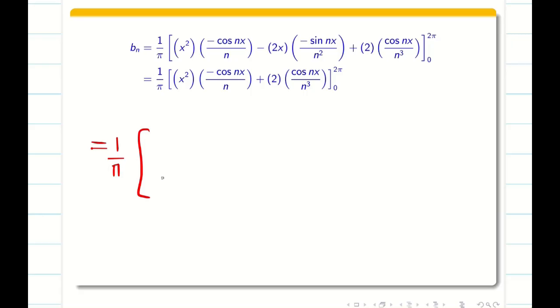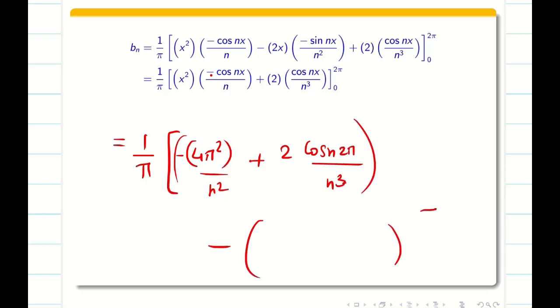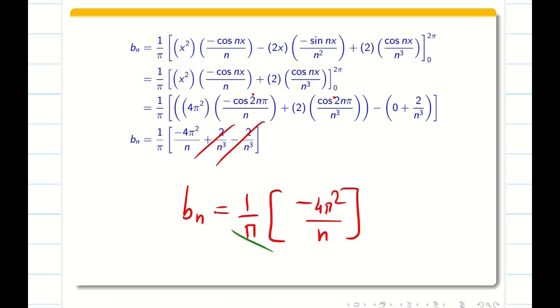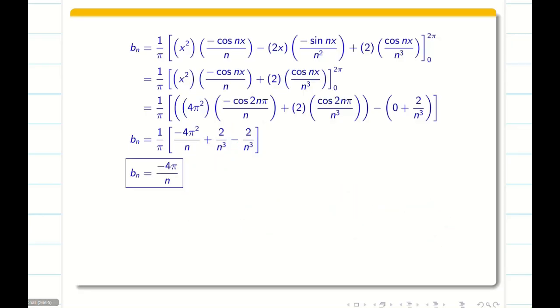Now simplifying this will be getting 1 by π. My upper limit is 2nπ. Simplifying this terms, I will be getting 4π square and this negative term I am writing here divided by n square plus 2 times cos n2π divided by n cube. This is my upper limit minus when I go for my lower limit. When I put 0 here, x square term is 0, so the whole term is 0. And for the second term I will be getting 2 into cos n0 divided by n cube. Now simplifying this, we know that cos 2nπ is 1 because it is going to be an even number. So I can substitute 1, 1 here. I will be getting this. Now I can cancel this both. Now my b n is 1 by π minus 4π square by n. Here this π, π will get cancelled and my answer is minus 4π by n. So I found my b n.